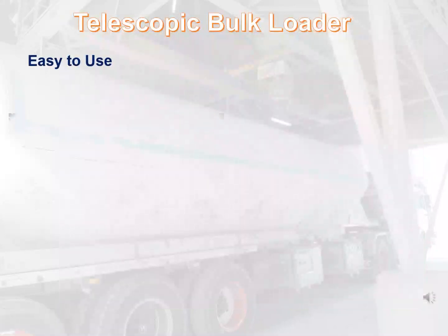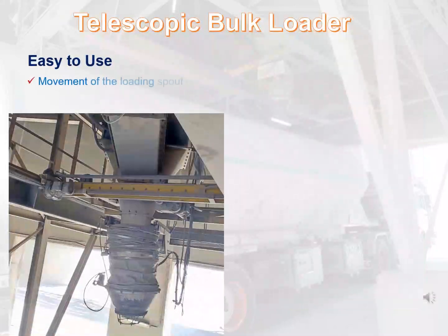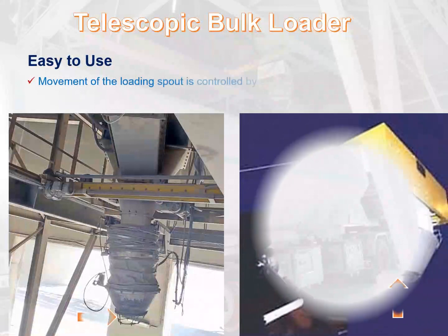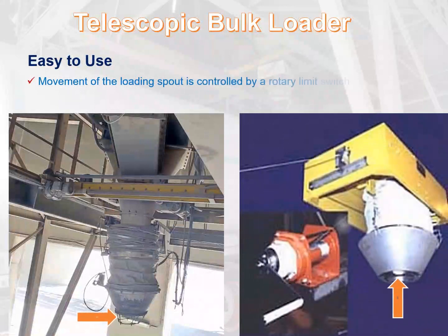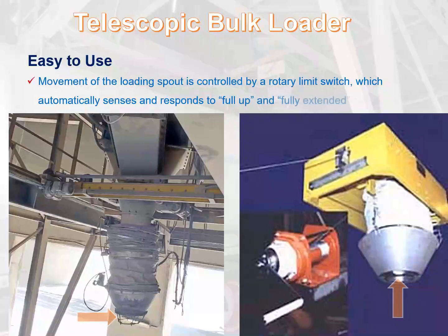Easy to use — telescopic bulk loader. Movement of the loading spout is controlled by a rotary limit switch, which automatically senses and responds to fully up and fully extended spout positions.